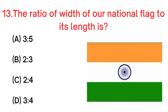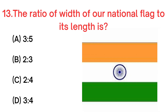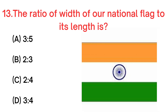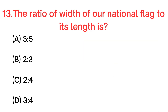Your next question. The ratio of width of our national flag to its length is: A. 3 ratio 5. B. 2 ratio 3. C. 2 ratio 4. D. 3 ratio 4.